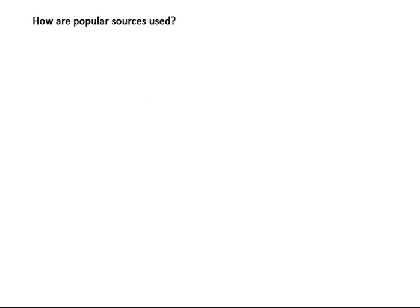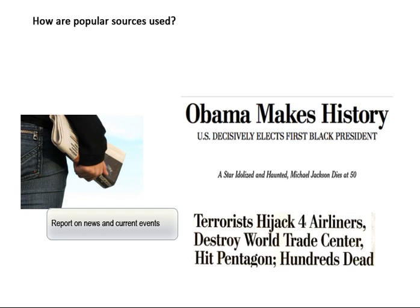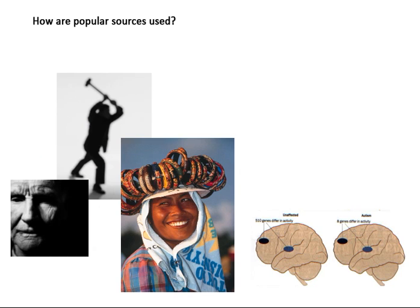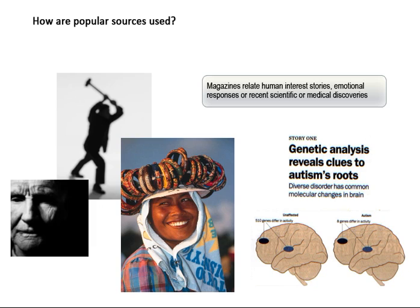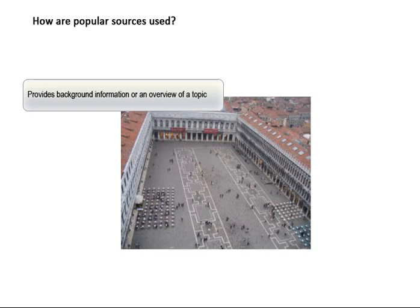So how are popular sources used? Newspapers typically report on news and current events as they occur, so these may work well for a current events topic. Magazines may share human interest stories, convey emotional responses to events, or report on recent scientific discoveries. Both newspapers and magazines can be useful for getting a general overview of a topic.